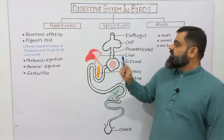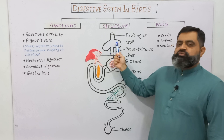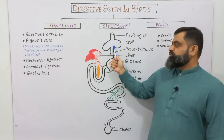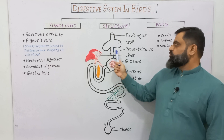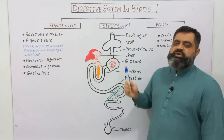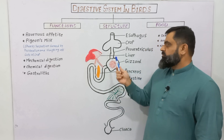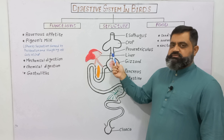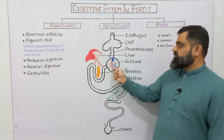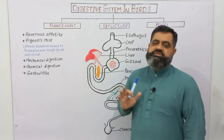After storage of food in the crop, food is transported into the gizzard through the proventriculus. The proventriculus is also known as the stomach, but it is the first portion of the stomach. The second portion is known as the gizzard, where both mechanical and chemical digestion take place.